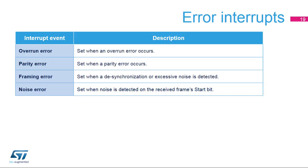Several error flags can also be generated by the LP UART as shown in the table. The overrun, parity and framing error flags are each set when the corresponding error occurs. The noise error flag is set when noise is detected on the received frame's start bit.